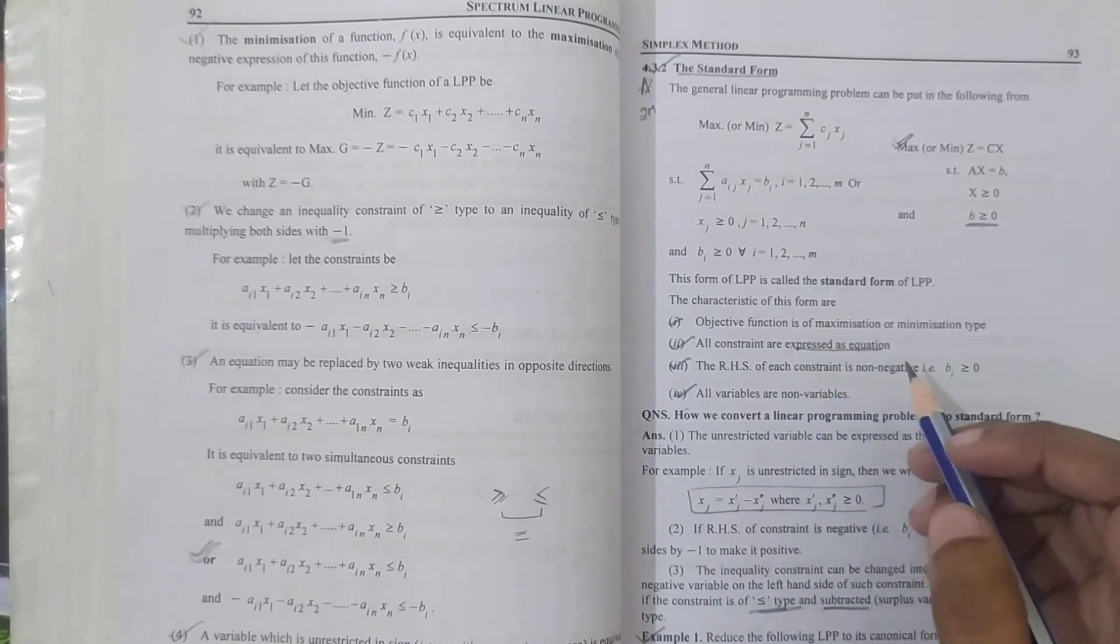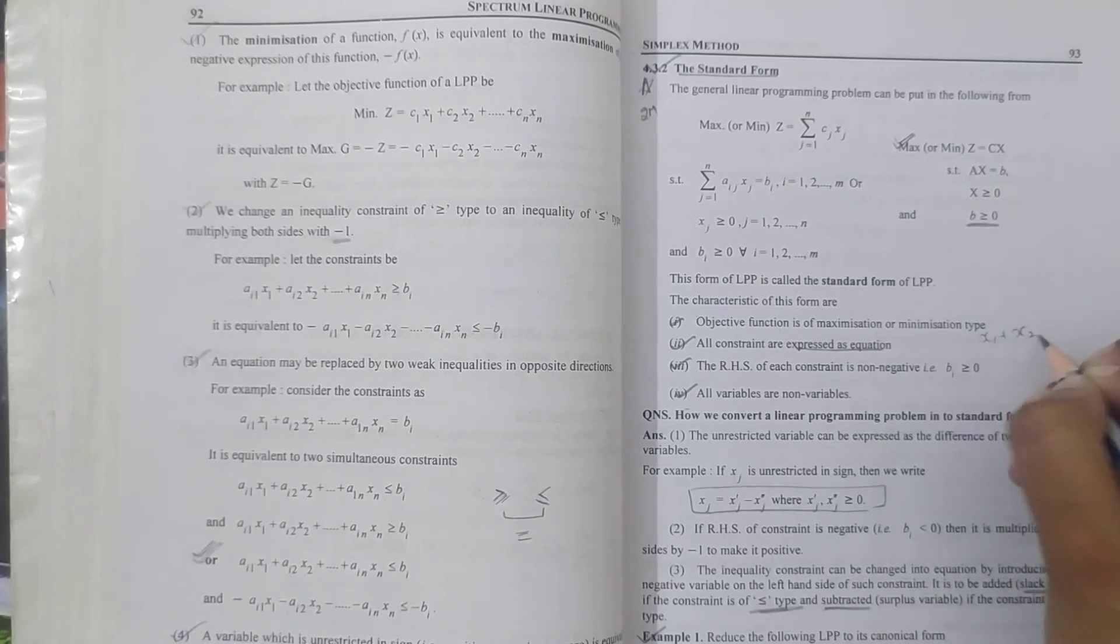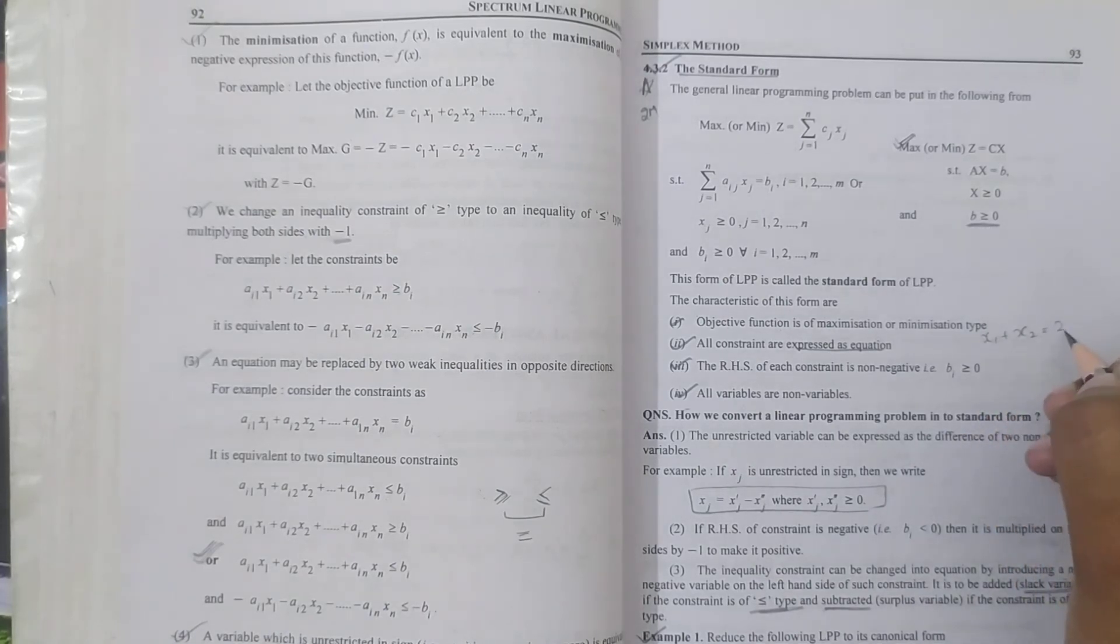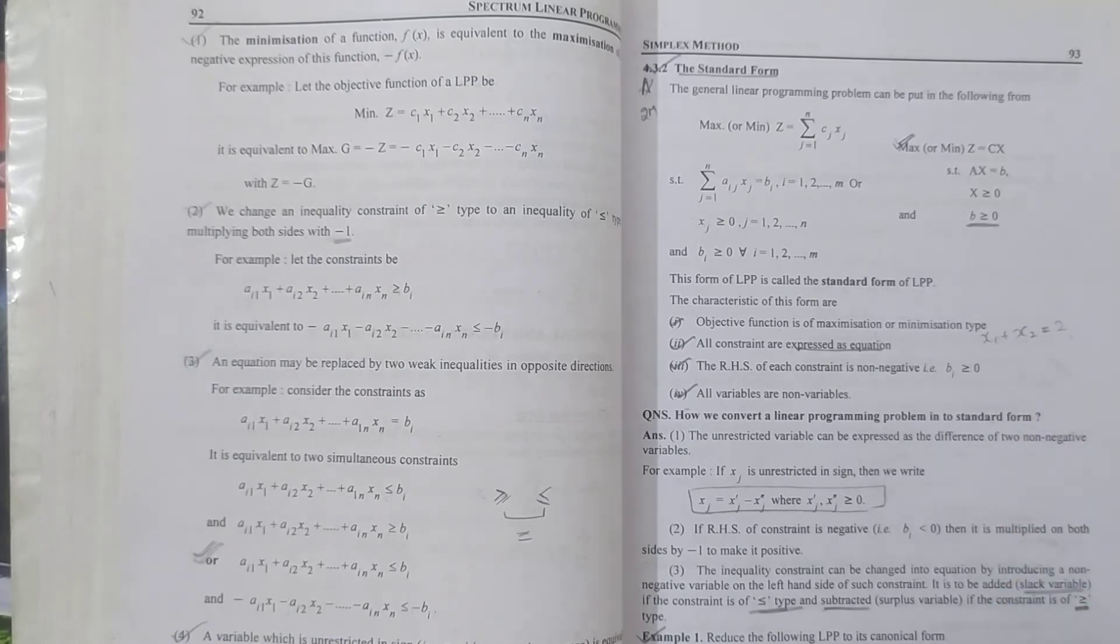Equation constraints are like x1 plus x2 equals 2. This is our equation where our constraints are in equality form.